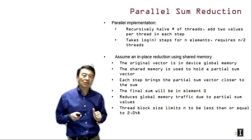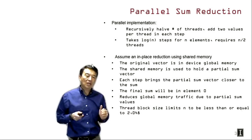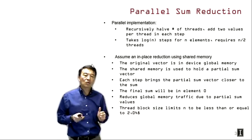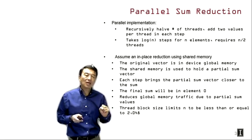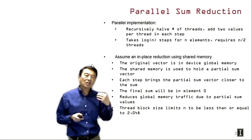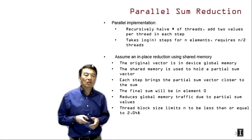The thread block size limits the section size to be less than or equal to 2048, because we can have up to 1024 threads. With this simple kernel design, we're going to be able to process twice the number of elements per thread block.